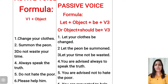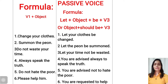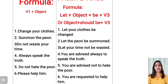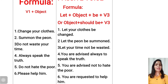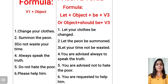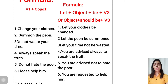Next example: 'Summon the peon.' First we write 'Let', then the object 'the peon', then 'be', then Verb 3 of summon, which is 'summoned'. So the passive voice is: Let the peon be summoned.